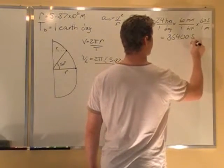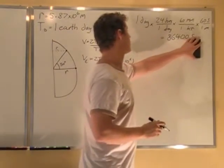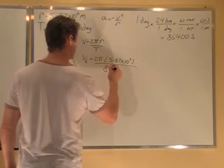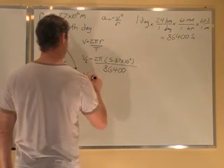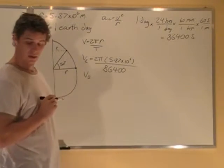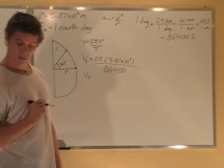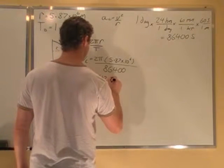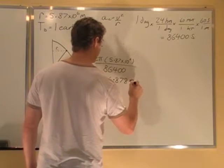Seconds per day, basically. So that's how many seconds we're going to be using. So 86,400. So the velocity of people at this point on the earth is equal to 426.878 meters per second.